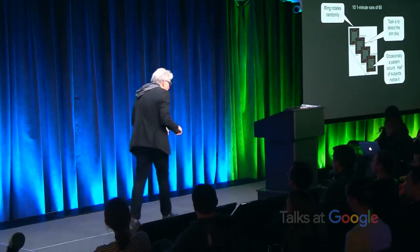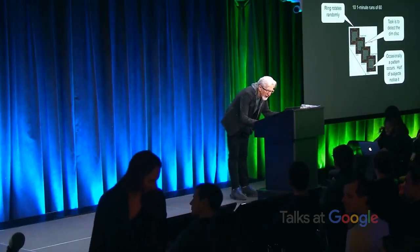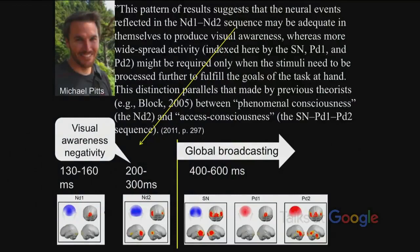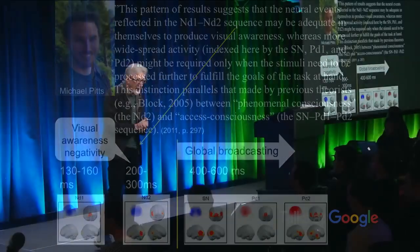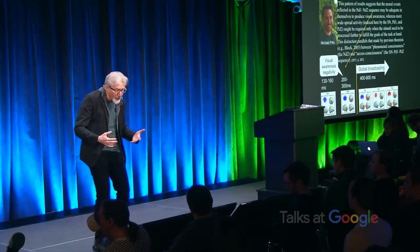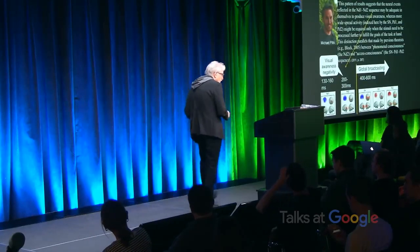This supports my view. Pitts says: the pattern of results suggests that the neural events reflected in ND1 and ND2 may be adequate in themselves to produce visual awareness, whereas more widespread activity occurring at 400 to 600 milliseconds might be required only when the stimuli need to be processed further to fulfill the goals of the task at hand. This distinction parallels that made by previous theorists between phenomenal consciousness and access consciousness. What he shows is that it's reporting — the cognitive processes underlying reporting and conceptualizing — that lead to global workspace activation.